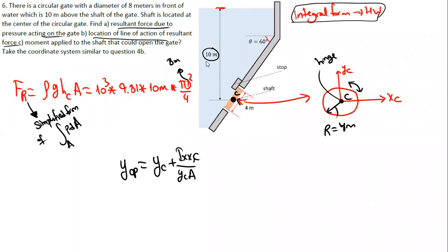The second moment of area for the circle is π·r⁴/4. You can write it as radius to the power of 4 divided by 4. The area is πd²/4. Now for the yc distance: as I said, the yc distance should be the inclined version, not hc.